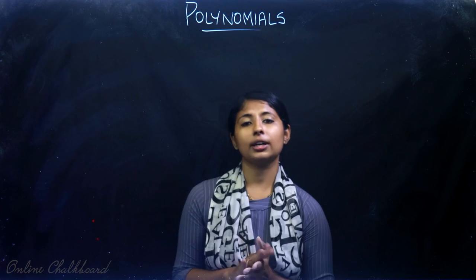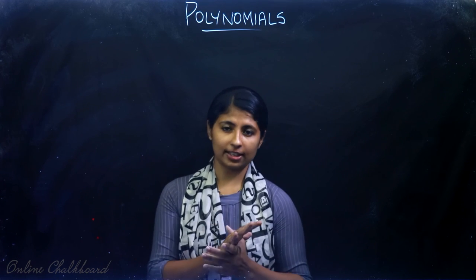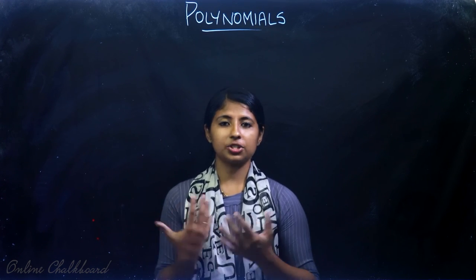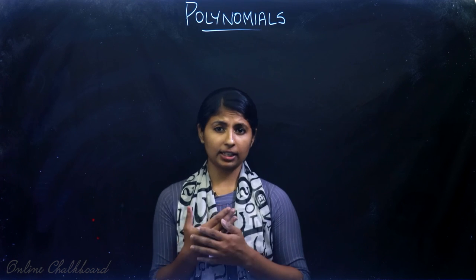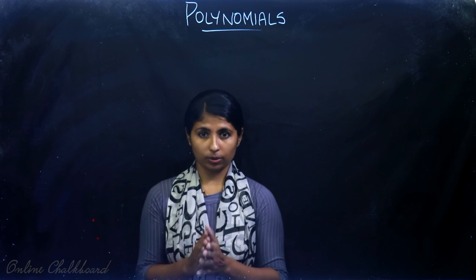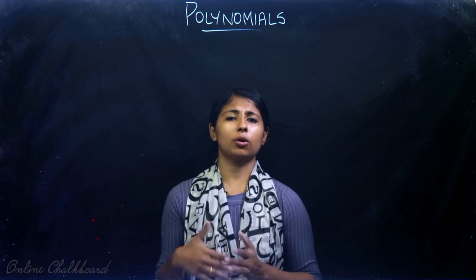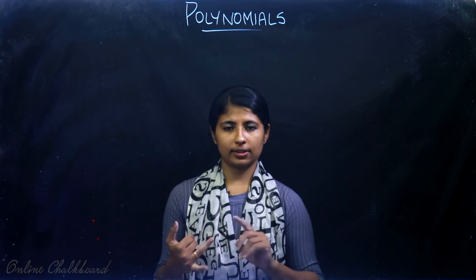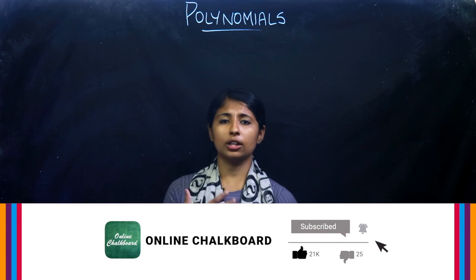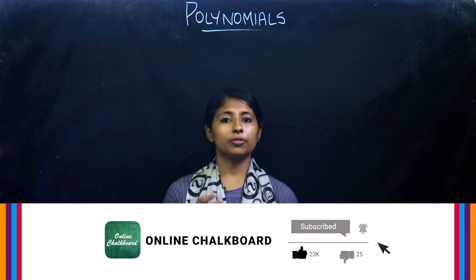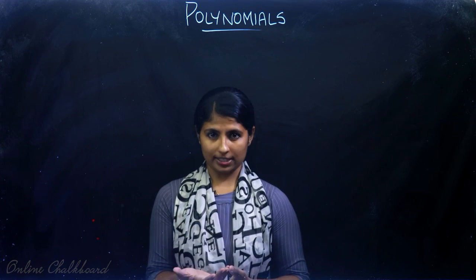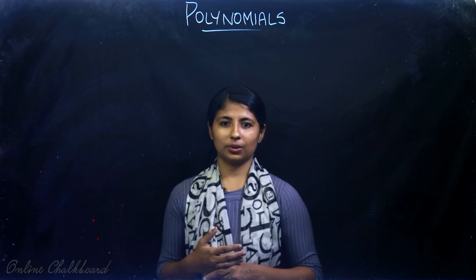So we wind up our class for today. With this, we have finished Exercise 2.2. We learned how to verify the relation between zeros of a polynomial and its coefficients, and also how to form a quadratic polynomial using the sum and product of zeros. In the next section, we will be learning about the division algorithm of polynomials. If you have any doubts, please comment, and do practice more questions. We'll see you in the next video. Thank you.